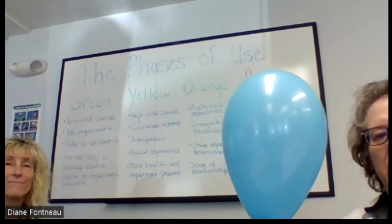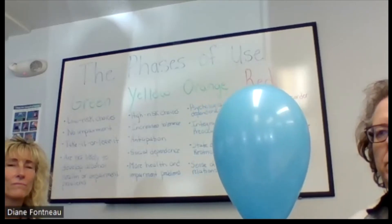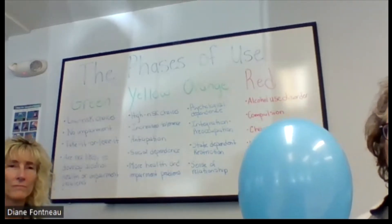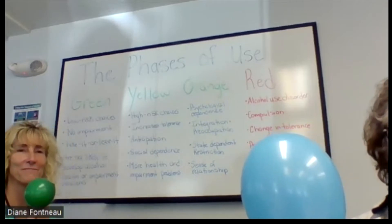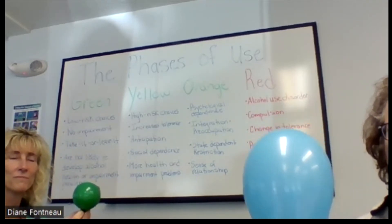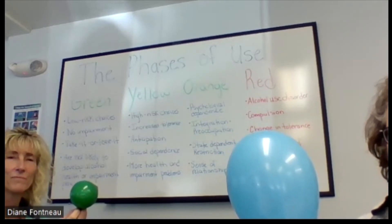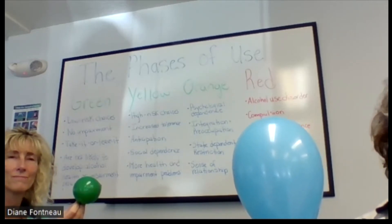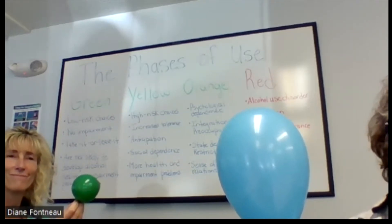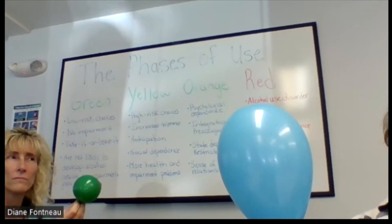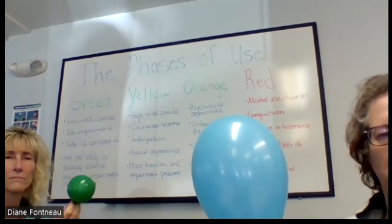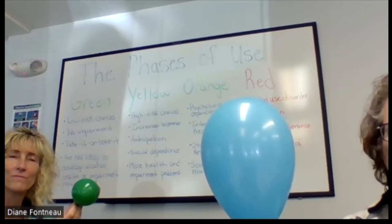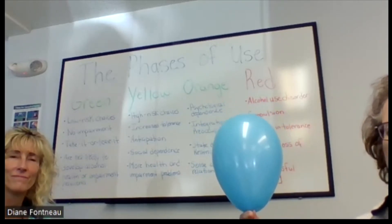As you add alcohol to the scenario, starting at low levels, you have what we call the green balloon, which represents the initial stages of use. It doesn't affect your blue balloon too much — it's initial low-risk choices, not much impairment, kind of take-it-or-leave-it alcohol. You maybe had a little bit once and didn't really think about it again for a while. You don't develop any health impairments or other problems, just very mild interaction with alcohol. Your blue balloon stays pretty much the same — you're pretty healthy.